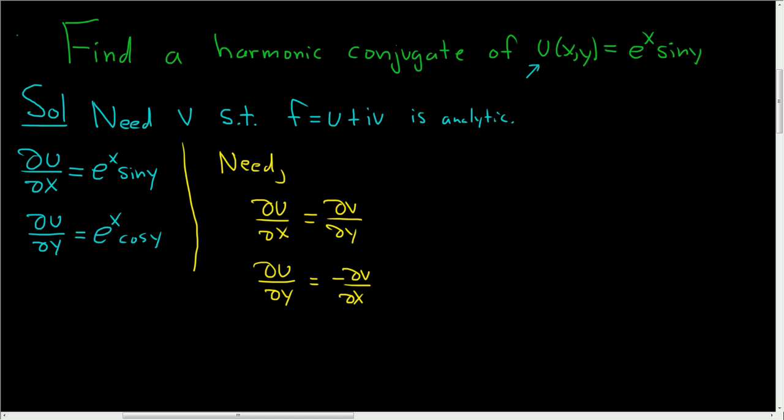Let's carefully write down what this means in terms of v. We have del v del y, and we want that to equal del u del x. So this should equal e to the x sine y.